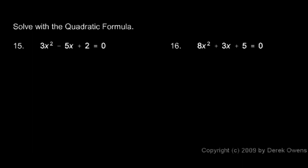In problem 15, we're given the equation 3x squared minus 5x plus 2 equals 0. So these numbers, the 3 and the minus 5 and the 2, are our values for a, b, and c. So a is equal to 3, b is equal to negative 5, and c is equal to 2.